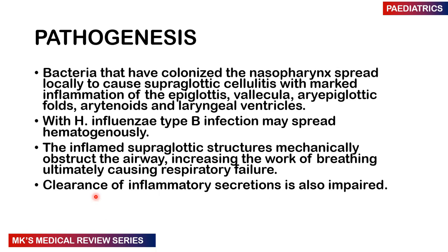These bacteria colonize the nasopharynx, then spread locally causing supraglottic cellulitis, often accompanied by marked inflammation of the epiglottis, vallecula, aryepiglottic folds, arytenoids, and laryngoventricles. Haemophilus influenzae type B may spread hematogenously. The inflamed supraglottic structures mechanically obstruct airflow, increase the work of breathing, and ultimately result in respiratory failure. Clearance of inflammatory secretions is also impaired, contributing to respiratory obstruction.